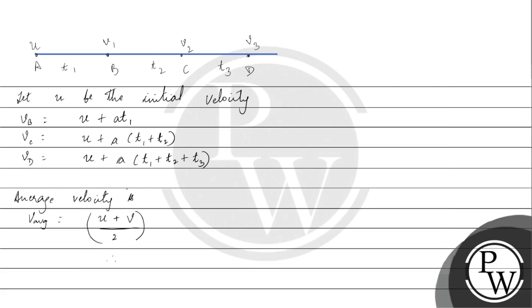So in this case, we can say v1 is equal to ub plus vb divided by 2, v2 is equal to uc plus vc divided by 2, and v3 is equal to ud plus vd divided by 2, where ub, uc and ud are the initial velocities at points b, c and d respectively.